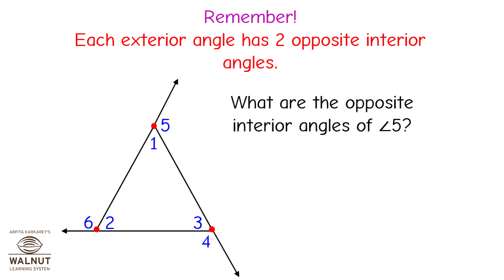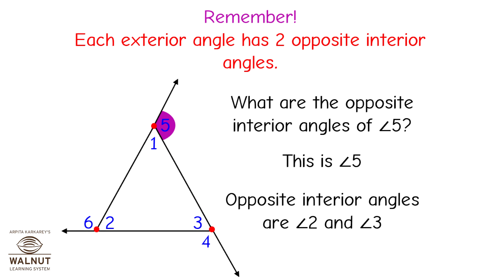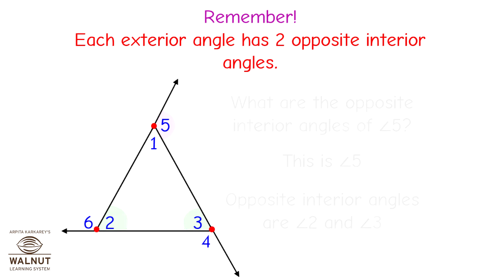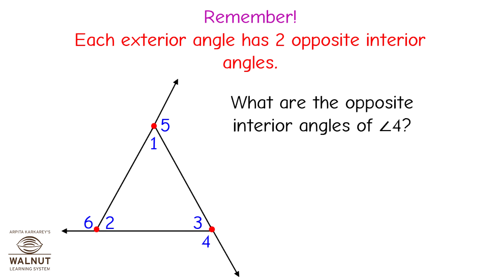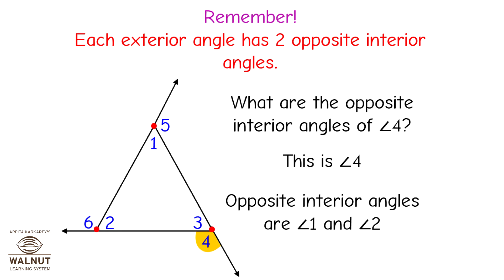What are the opposite interior angles of angle 5? This is angle 5 — the opposite interior angles are angle 2 and angle 3. What are the opposite interior angles of angle 4? This is angle 4 — the opposite interior angles are angle 1 and angle 2.